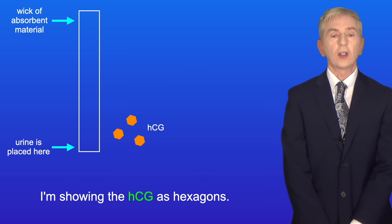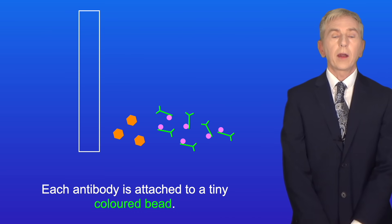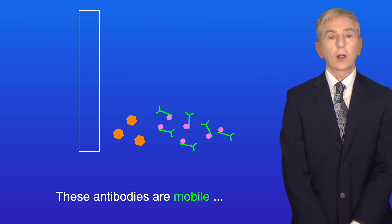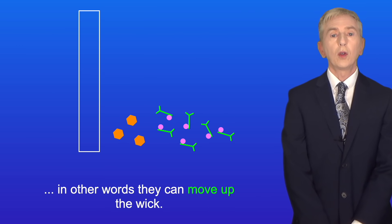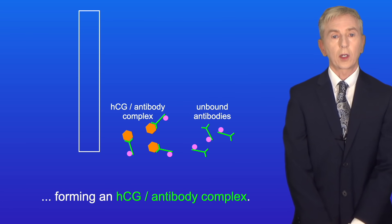I'm showing the HCG as hexagons. The wick contains monoclonal antibodies to HCG. Each antibody is attached to a tiny colored bead. I'm showing these beads in pink. Now these antibodies are mobile. In other words, they can move up the wick. The antibodies now bind to the HCG, forming an HCG antibody complex.